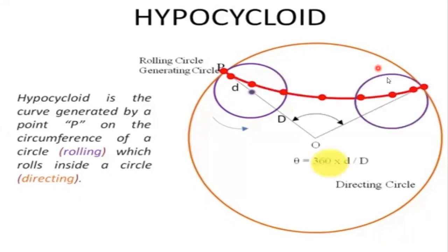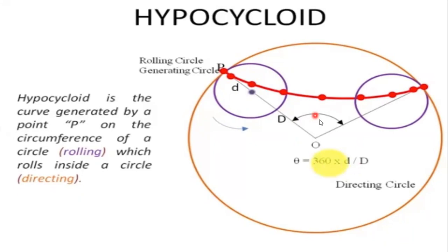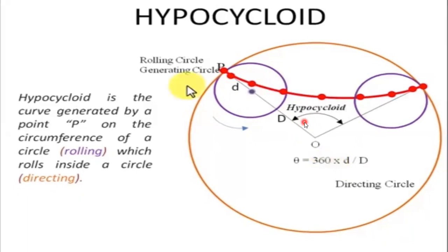To find the angle, we use the formula: theta = 360 × (smaller diameter / greater diameter). Once we get the angle, we can mark it on the diagram. The final image of the hypocycloid will be generated based on this.